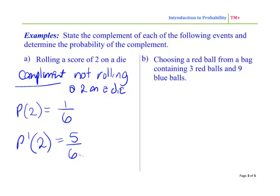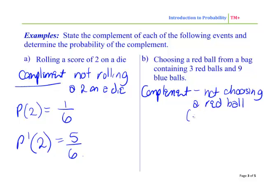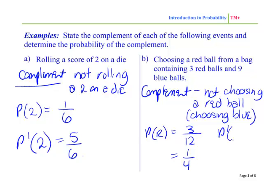Choosing a red ball from a bag containing 3 red balls and 9 blue balls. So my event here is choosing a red ball. The complement would be not choosing a red ball, which actually means choosing blue. So the probability of red is 3 out of 12, because there's 12 balls, which is 1 out of 4. So the probability of not choosing red is 1 minus the probability of red, so 1 minus a quarter, which is 3 quarters.